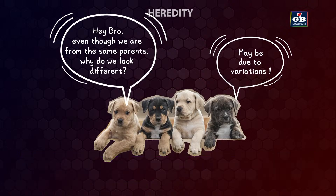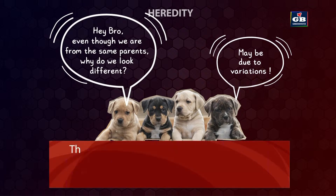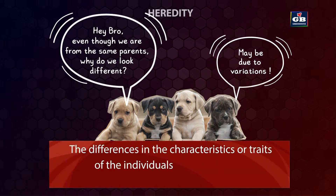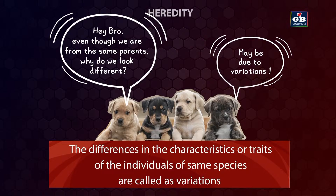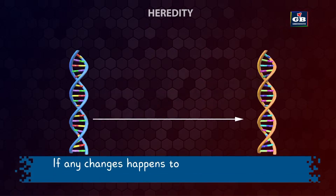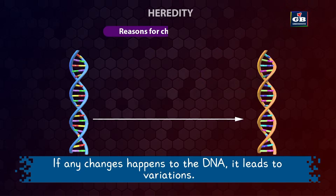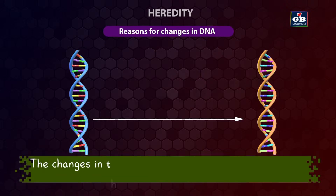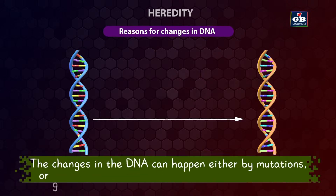Let us see the definition of variations. Variation refers to the differences in the characteristics or traits of individuals within the same species. What causes the variations in organisms? If any changes happen to the DNA, it leads to variations. The changes in the DNA can happen either by mutations, genetic recombination, or environmental influences.